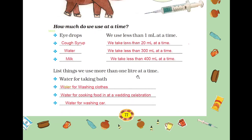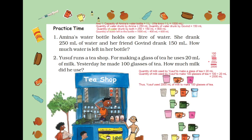Next question: List things we use more than 1 liter at a time. Children, water for washing clothes — you use more than 1 liter at a time. Water for cooking food at a wedding celebration. Water for washing a car. I have written these down. So, moving to the next question.